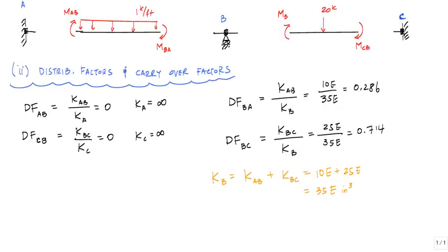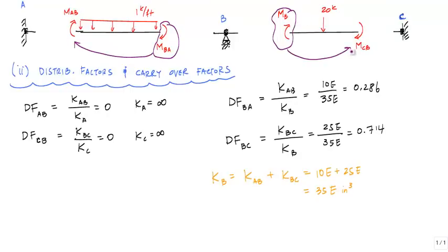Now we need to determine the carryover factors — the factors that tell us how much of the distributed moment we carry over to the other side of the member. From the joint we're looking at, the far end is fixed, so the carryover factor is one half. In both cases here, because the far ends are fixed, each of these carryover factors are one half.